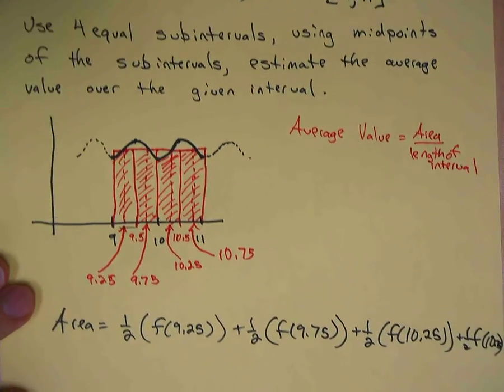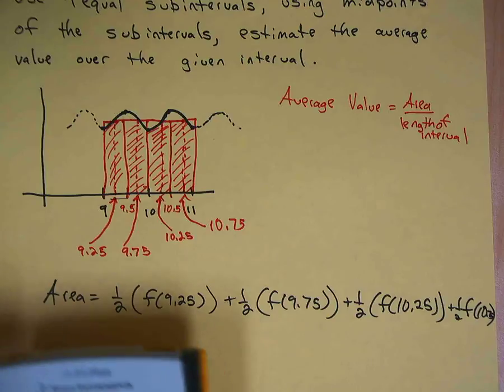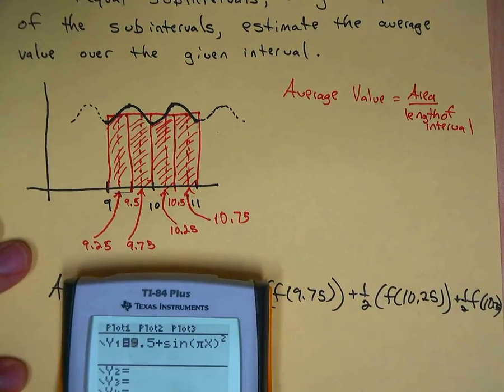Which I've already done, so I've got the function. I'll show you: y equals now 0.5 plus sine squared pi x.